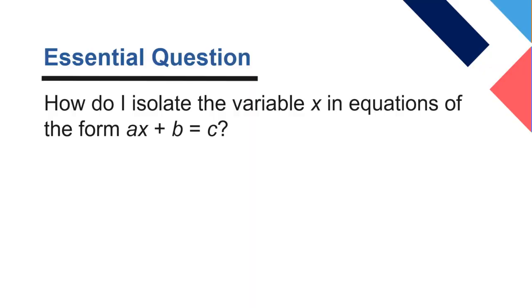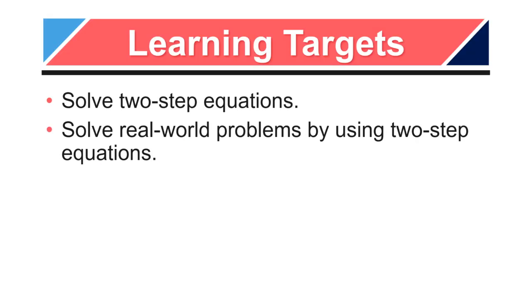Essential question: How do I isolate the variable x in equations of the form ax plus b equals c? Now, if you notice, here's the key that we have here, that there's something being multiplied and added. So we call those two-step equations. We're going to solve them and, of course, real-world problems.